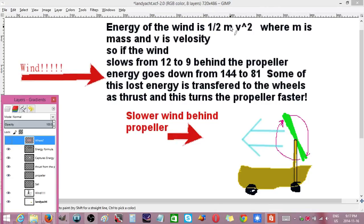And here's the energy of the wind: 1/2 m v^2, where m is the mass and v is the velocity. So if the wind slows from 12 miles per hour to 9 miles per hour, the energy of the wind goes down from 144 to 81.